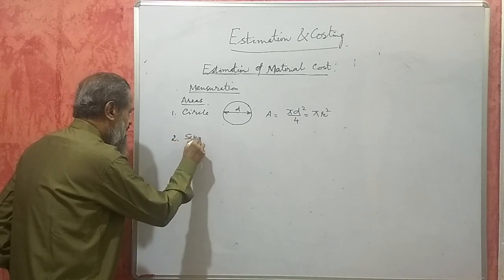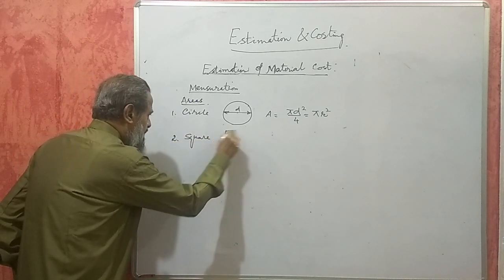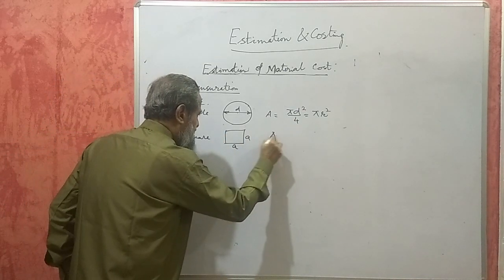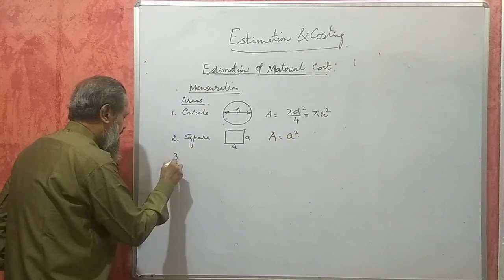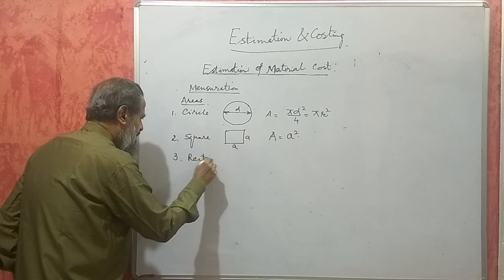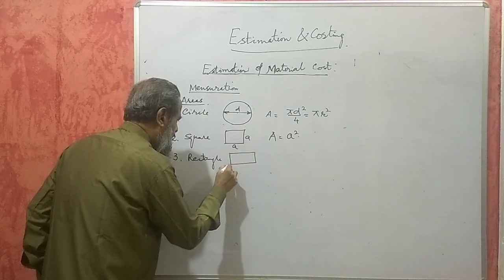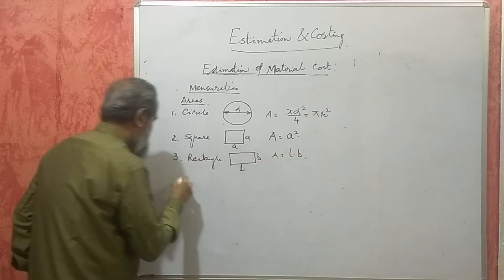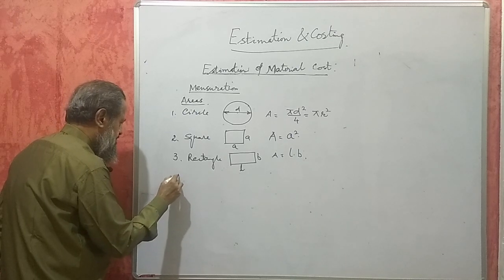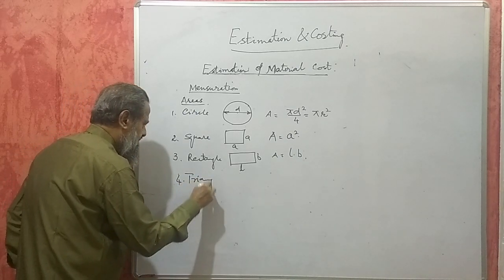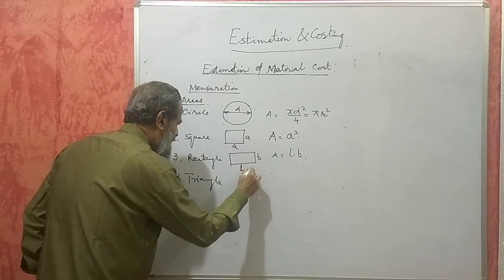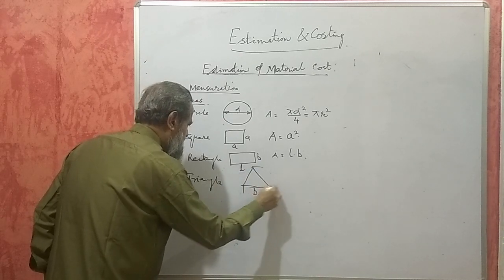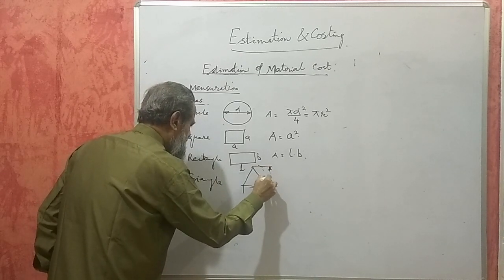If it is a square — a square has four equal sides — so the area will be equal to a². For a rectangle — a four-sided figure — its area will be l × b. Then, if it is a triangle, the area will be ½ × base × height, where height is also called altitude.